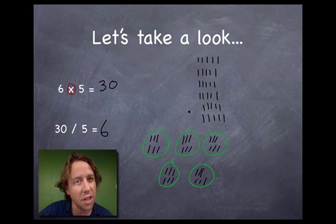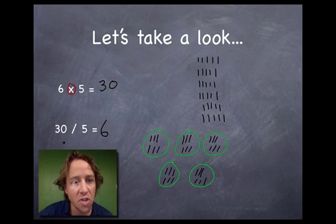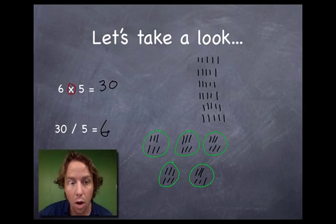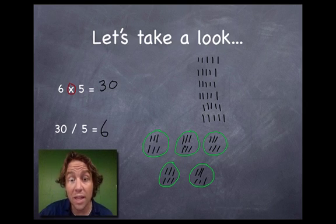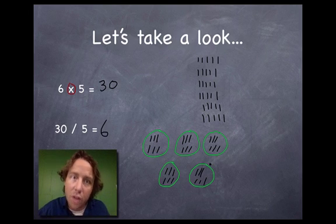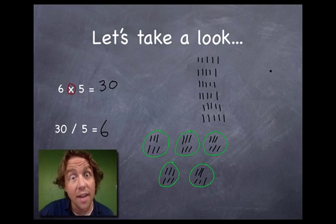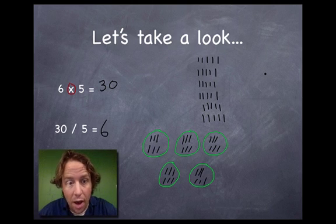Do you see something? Look at this multiplication problem up here. Six groups of five is 30 — and 30 cut into five groups is 6. It's the same numbers! 6 times 5 equals 30; there's the 6, there's the 5, and this time the 6 is the answer. If you mashed all these groups together, you'd have 30 — which is exactly how many cupcakes we started with.